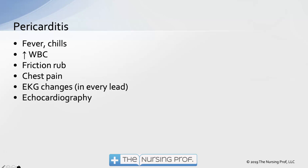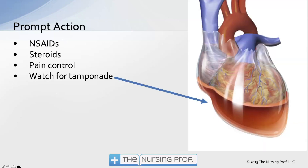Chest pain is obvious. EKG changes will be present — be aware that these are going to be in every lead, instead of certain leads as with a myocardial infarction depending on the part of the heart involved. Echocardiogram is another way to look at the heart to determine if the patient has pericarditis. Our prompt action is to give the patient non-steroidal anti-inflammatories and steroids to decrease the inflammation.